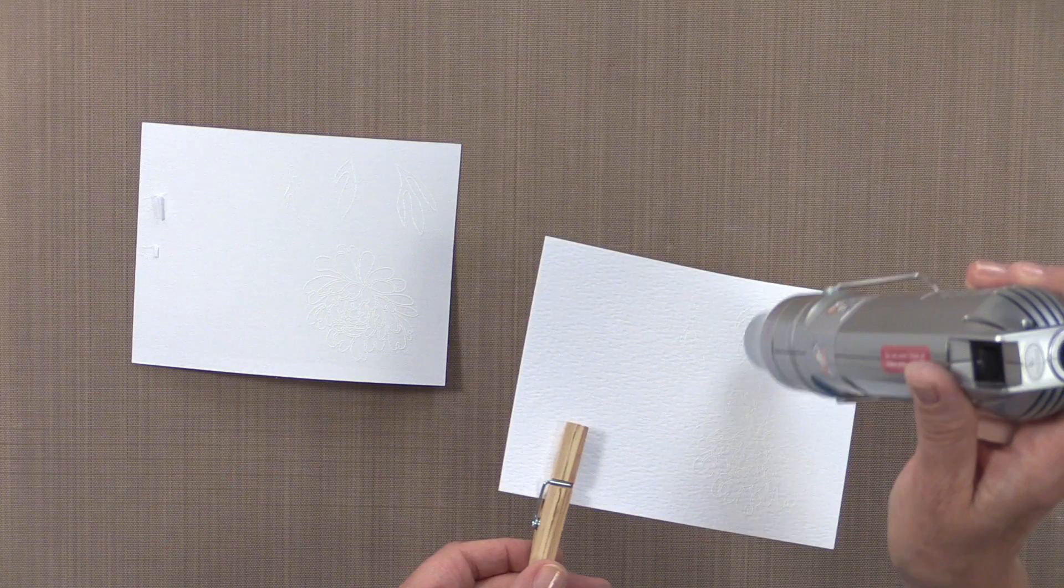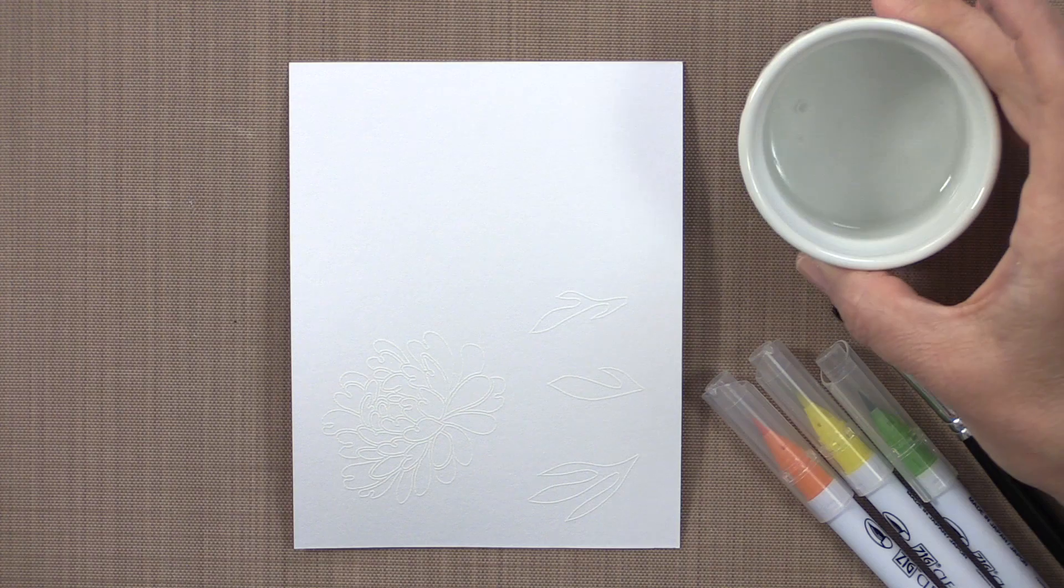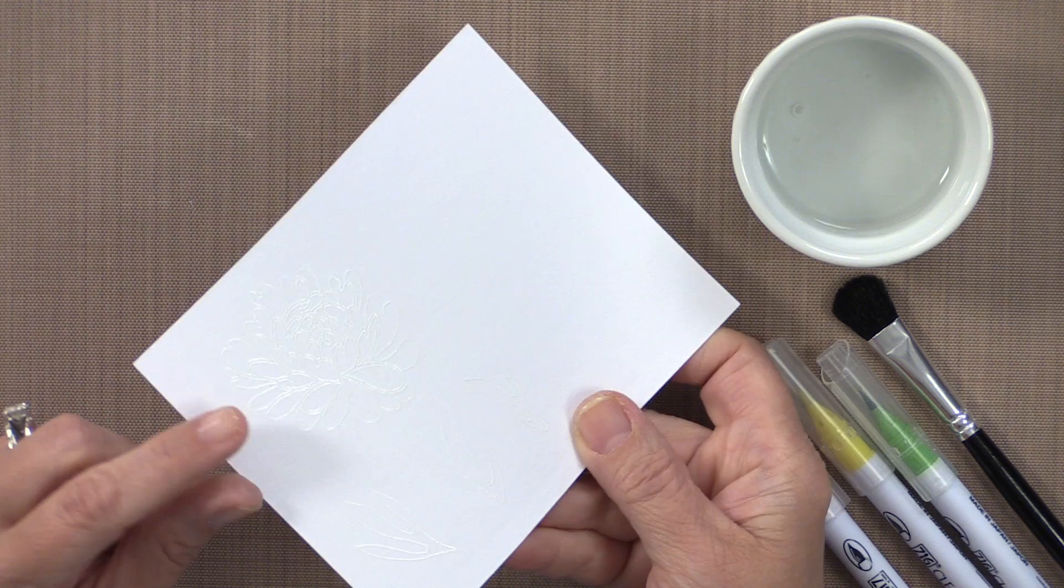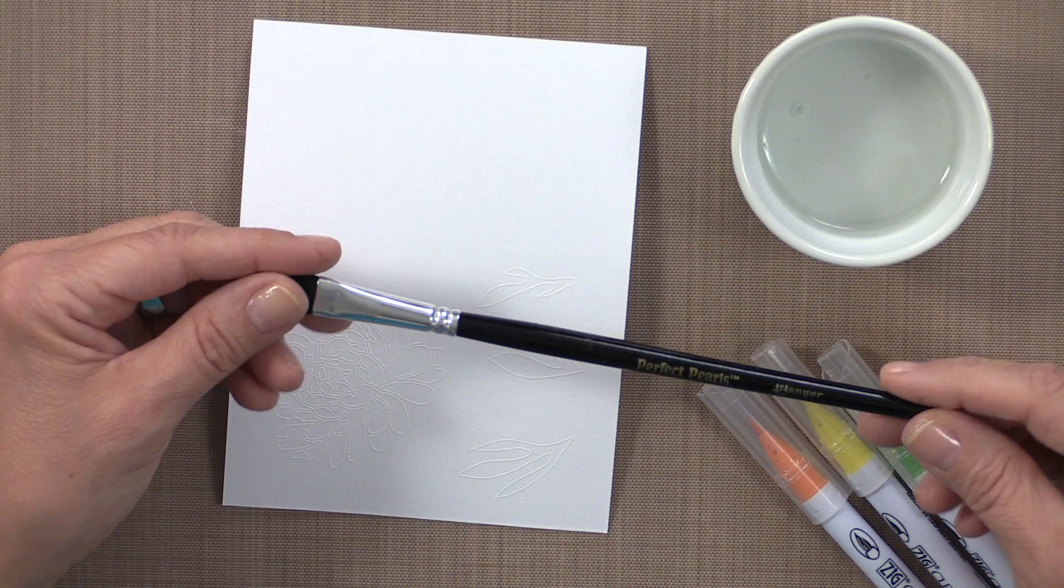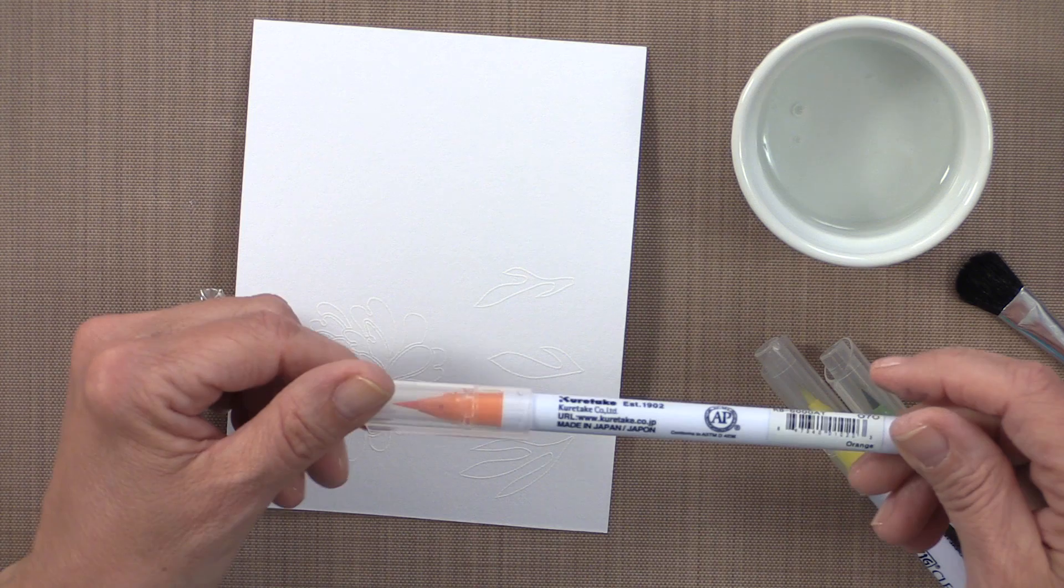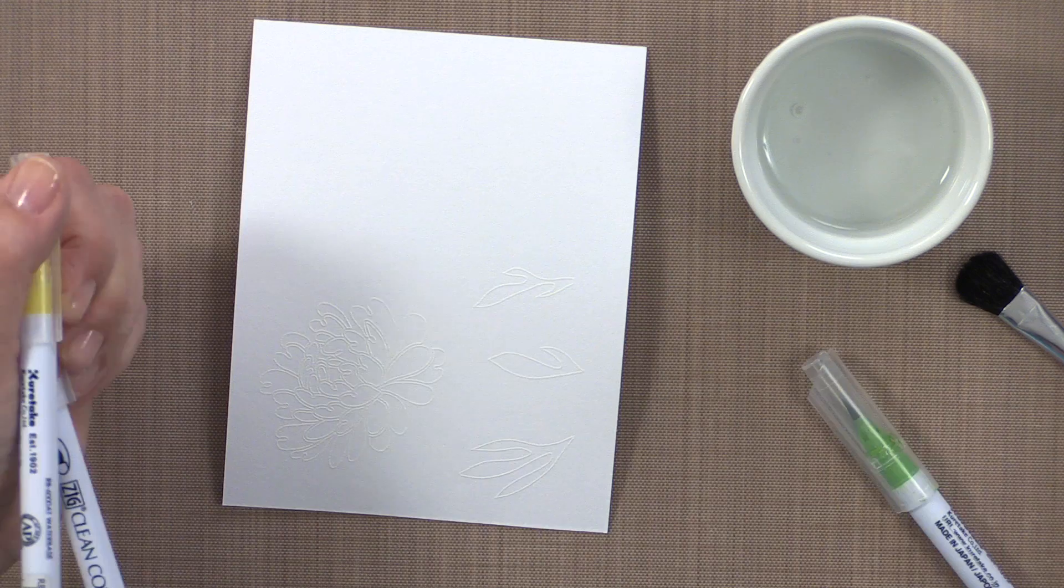Here I have a little cup of water, and I also have my watercolored paper with my design embossed on top. And then I'm going to use a paintbrush, and the only one I had close by was this Perfect Pearls brush, so I'm going to use that. I'm also going to use three different Zig Clean Color brush markers. I'm using orange, I'm using lemon yellow, and I'm going to use light green. But you can substitute for any colors that you have.